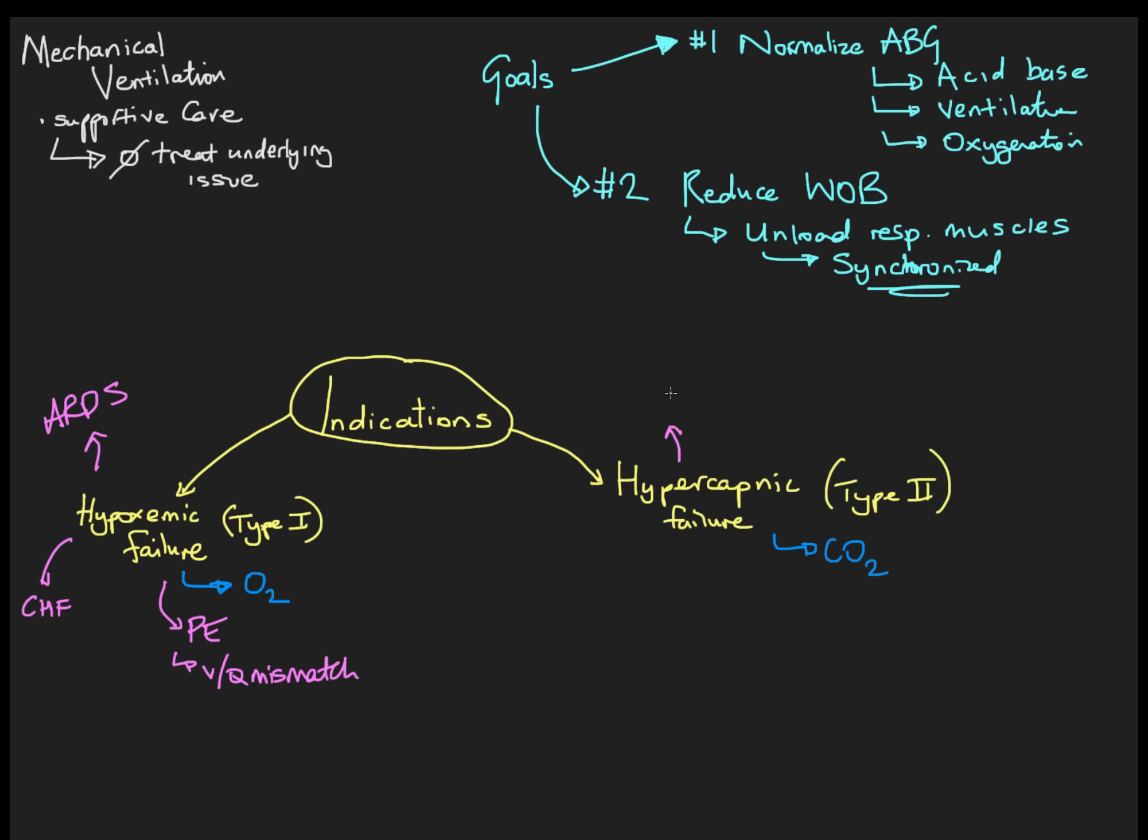So some things that can cause that are drugs, drug overdoses. We have things like COPD can cause hypercapnic failure, and neuromuscular disease. So these are some of the things that can cause hypercapnic failure, an accumulation of CO2, which leads to respiratory failure. And a neat way to remember these, well, at least I remember them, is type two failure pertains to CO2. So type two is CO2. I don't have a clever way to remember type one, but type two, CO2.